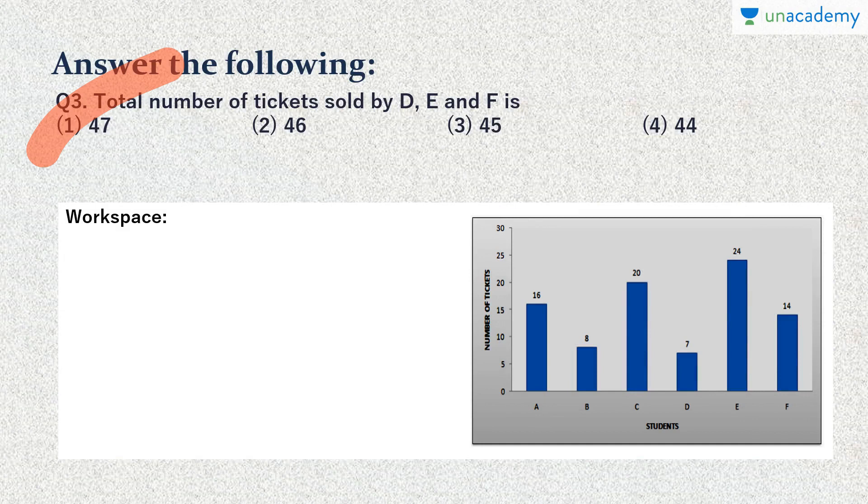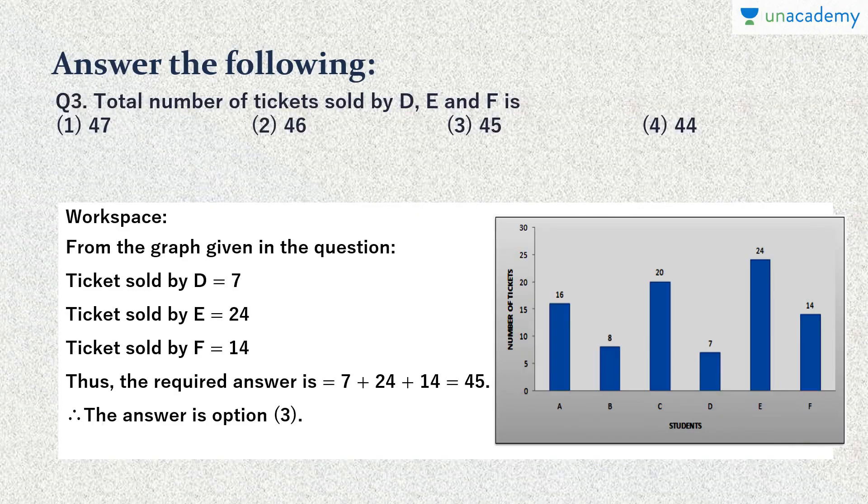Question 3: Total number of tickets sold by D, E, and F is? D has 7 tickets, E 24, and F 14. Similarly, as the first question, we need to just add up these numbers to get the total. So here we have added up 7, 24, and 14 to get 45, which is option 3.